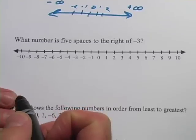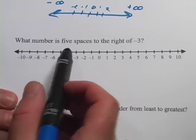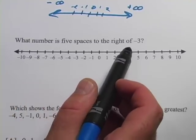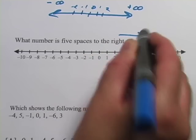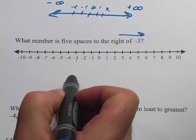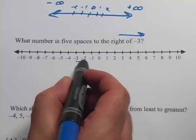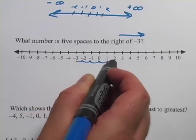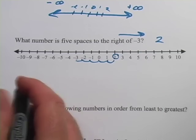All right, let's look at another one here. This one says, what number is 5 spaces to the right of negative 3? So the right is that way. So we start at negative 3, and we go 1, 2, 3, 4, 5, and we end up at 2. So the correct answer there is 2.